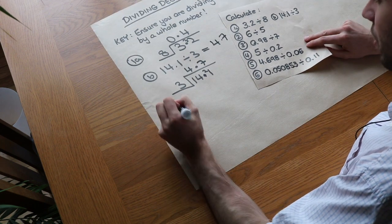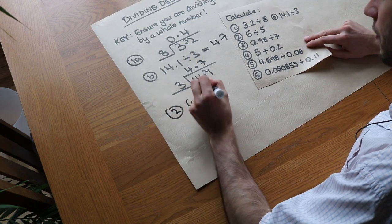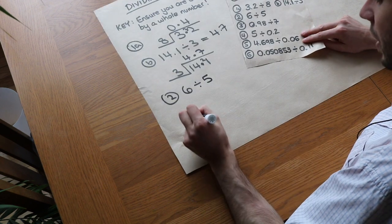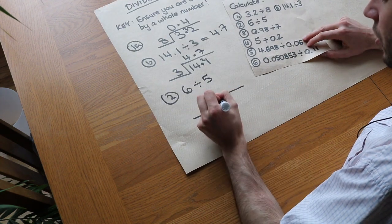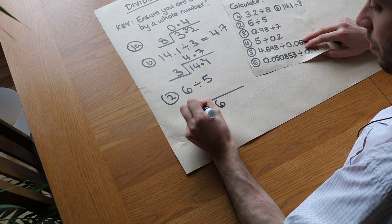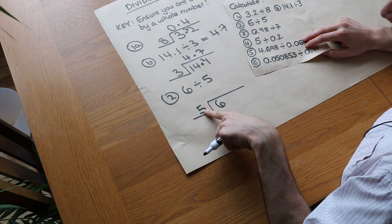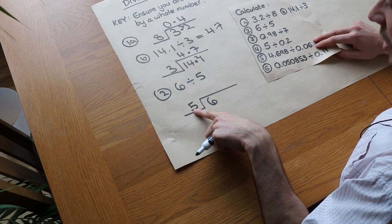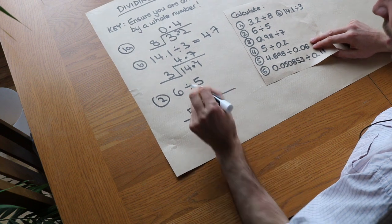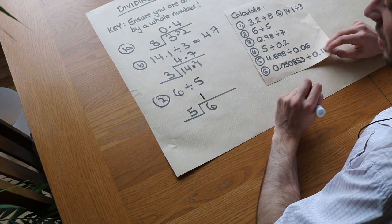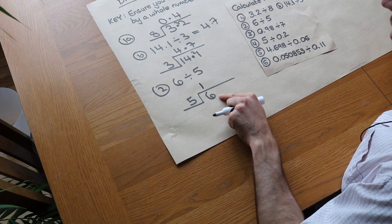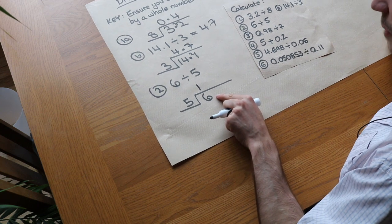Now this one's interesting because we've got 6 divided by 5, and they are both whole numbers, but we can do exactly the same thing. We're doing 6 divided by 5. So the number you're dividing by goes on the left. Now how many times does 5 go into 6? Well it goes in one time with a remainder of 1. Ah, but we've run out of digits. We have nowhere to put the remainder of 1.